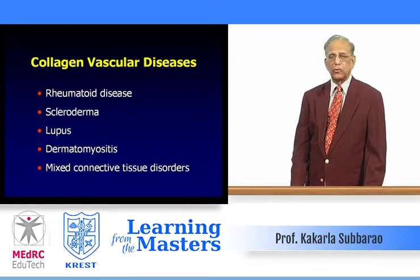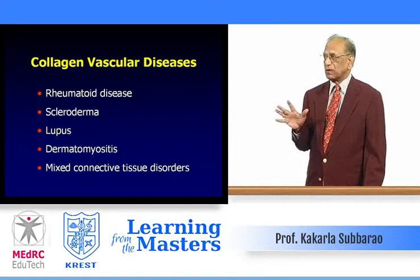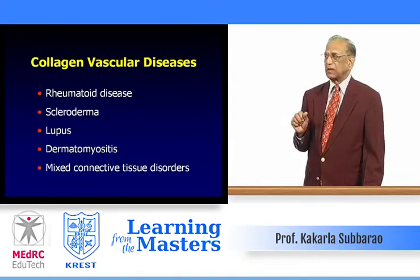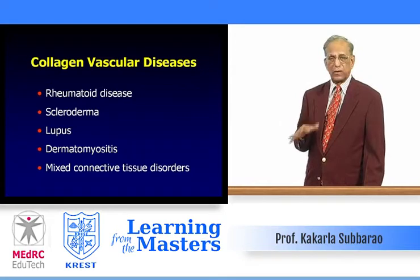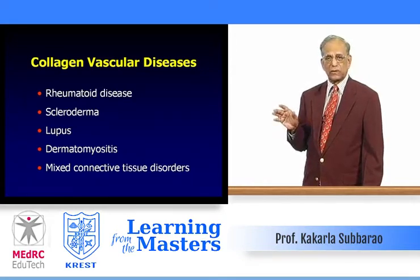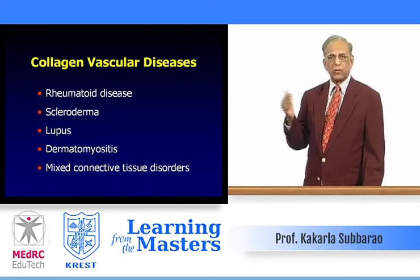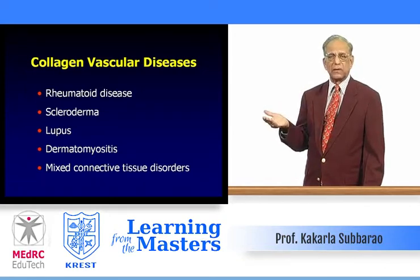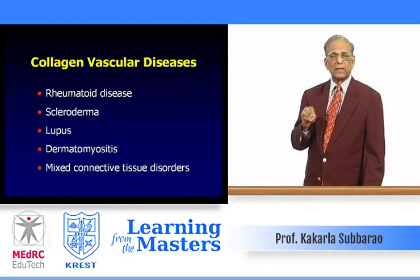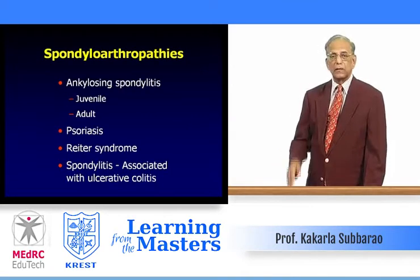The collagen vascular disorders include rheumatoid arthritis, scleroderma (progressive systemic sclerosis), lupus erythematosus, dermatomyositis, and mixed connective tissue disorders — because one may overlap with another. For example, scleroderma with rheumatoid arthritis features, or lupus with rheumatoid arthritis features. There is some overlap among these conditions.